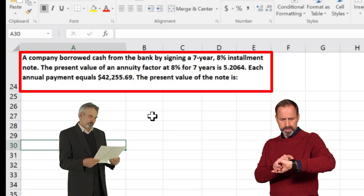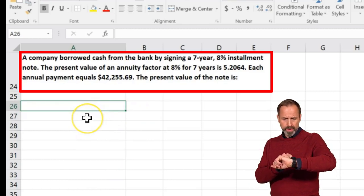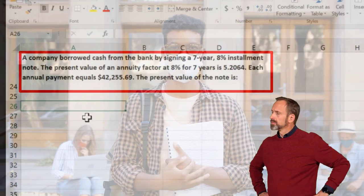The present value of the note is what? So we have kind of the opposite here. Now we have basically an annuity, and as long as the annuity is constant, then once again the easiest way to do that is to look at the annuity table and figure out what the value would be. They gave us that factor again.